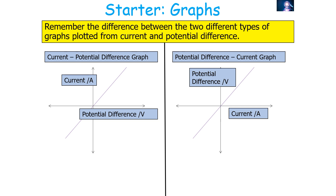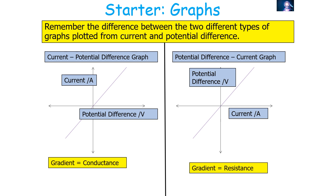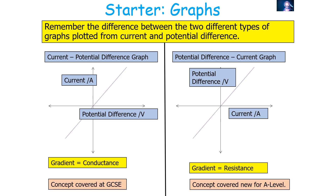Remember the difference between the two types of graphs: if you've got an IV graph with current on the y-axis and potential difference on the x-axis, the gradient is the conductance; whilst if you've got a VI graph with V on the y-axis and current I on the x-axis, the gradient is the resistance. It's also important to note that we covered IV graphs at GCSE, whilst the VI graph is a concept new for A-level physics.